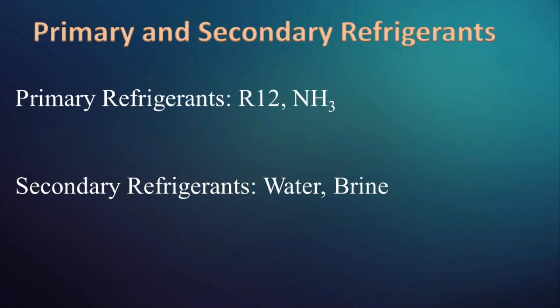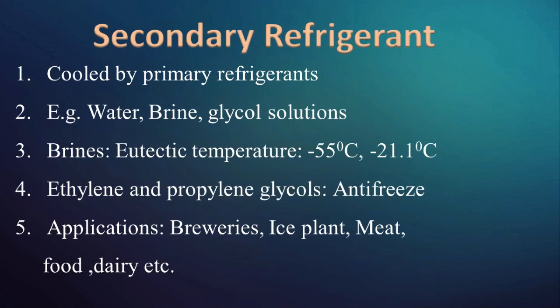Refrigerants are also classified as primary and secondary refrigerants. Primary refrigerants are the ones which are directly used as working fluid in the system, whereas secondary refrigerants are cooled by the primary refrigerant first and then used to cool the substance or space. The refrigerants discussed earlier are primary refrigerants. Secondary refrigerants include, for example, water or brine. Brine is a mixture of water and salts like sodium chloride and calcium chloride, used for cooling of meat, fish, or in ice plants.